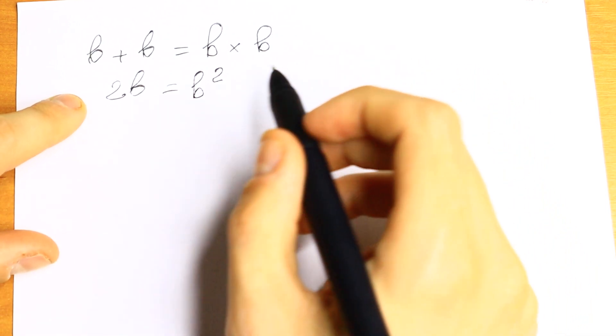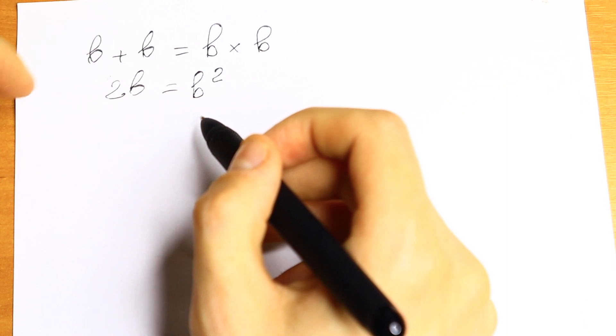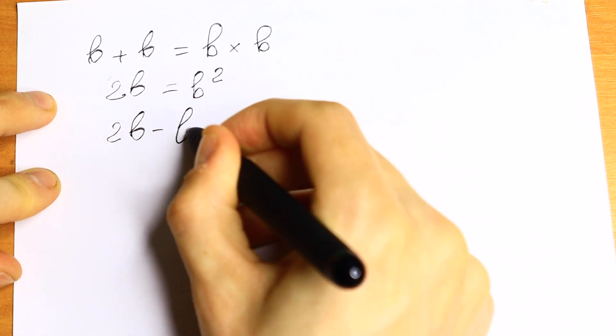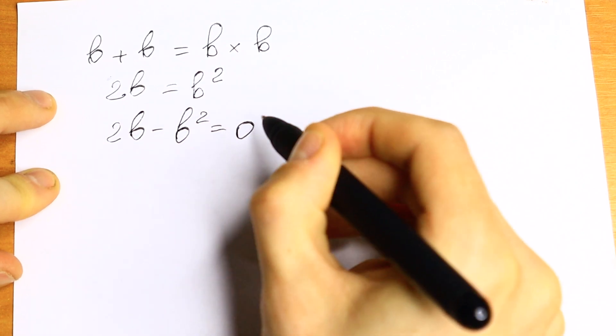How can you solve this equation? The best way to solve this is to bring this b squared to the left side. We will have 2b minus b squared equal to zero.